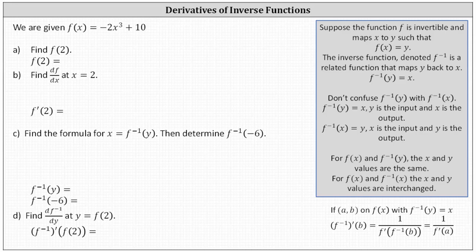We are given f of x equals negative two x cubed plus 10. For part a, we're asked to determine f of two. To determine f of two, we substitute two for x.